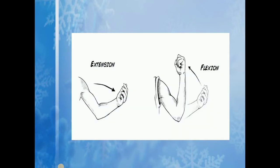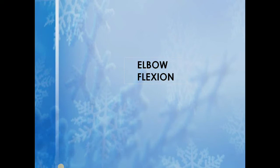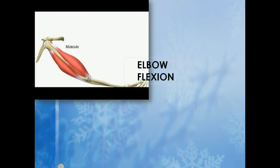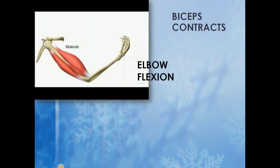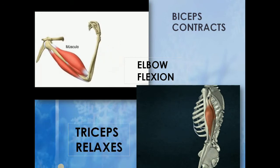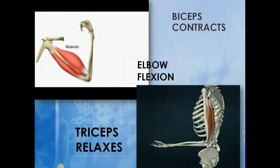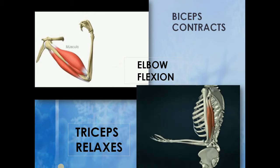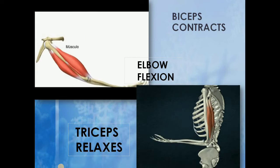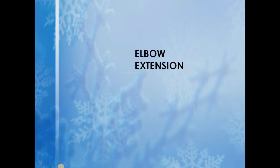During the movement of elbow flexion, biceps contracts and triceps relaxes. So for the movement of elbow flexion, biceps is agonist and triceps is antagonist.